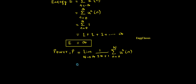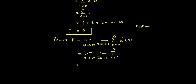So let me solve this. Limit capital N tends to infinity of 1 over (2N plus 1), summation n varying from 0 to capital N. The amplitude of u(n) is 1, so 1 squared is still 1. The summation of 1 from n equal to 0 to capital N means I have to add 1 capital N times, which turns out to be N plus 1.